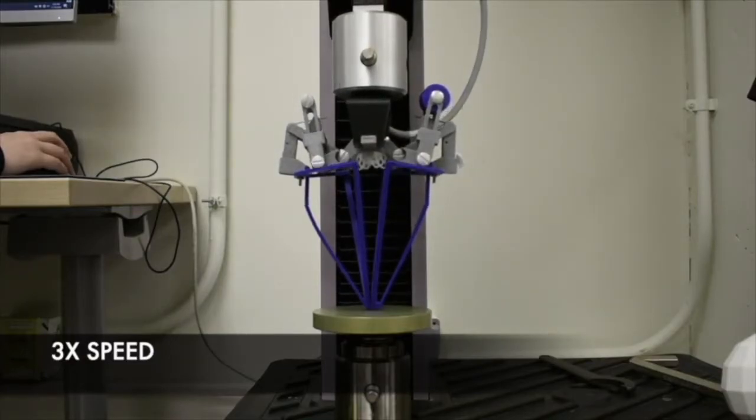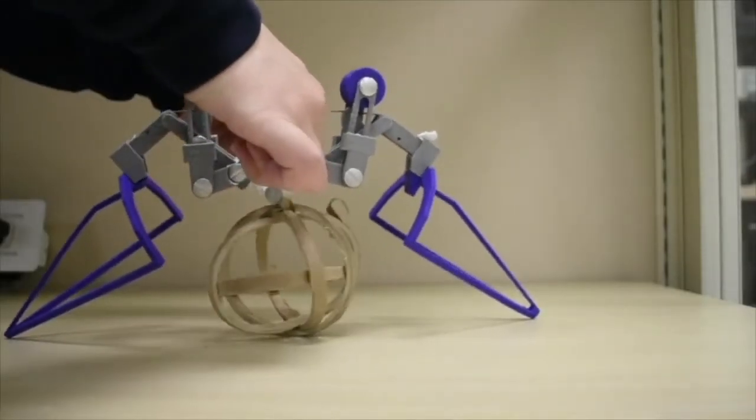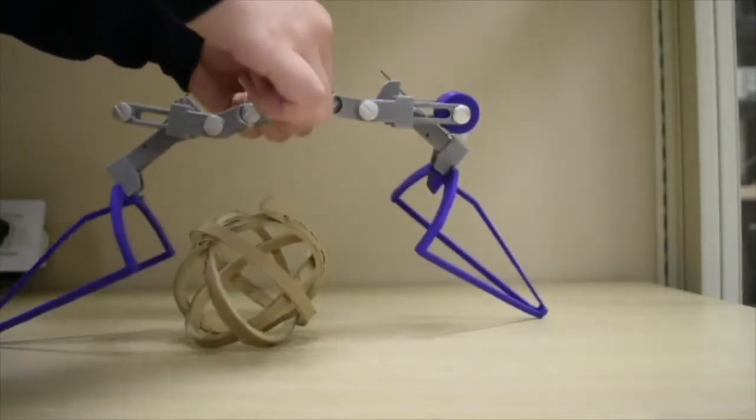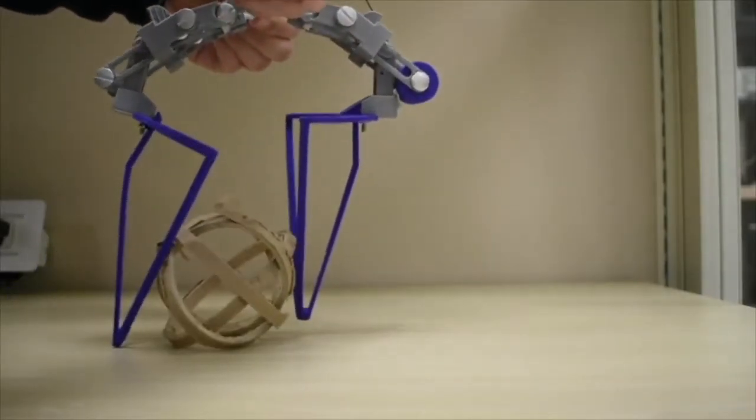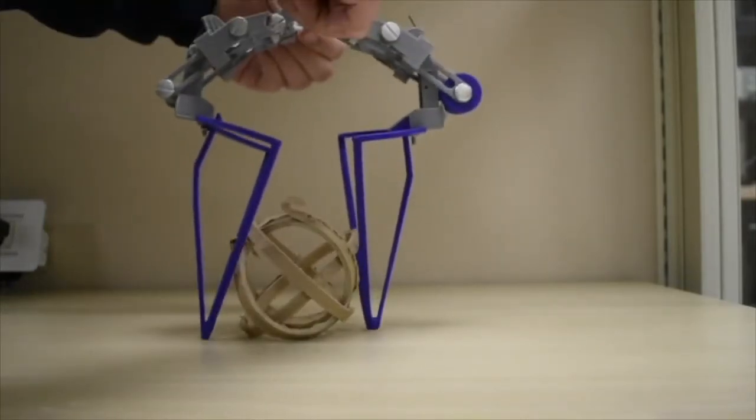When the manipulator moves the tips off of the ground, the object will be released. Here we show repeated grasping and releasing of an object using hand-picked design parameters. A mechanical stop also rotates to lock the hooks into place.